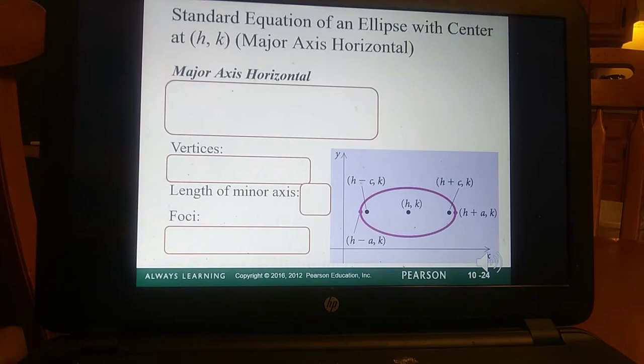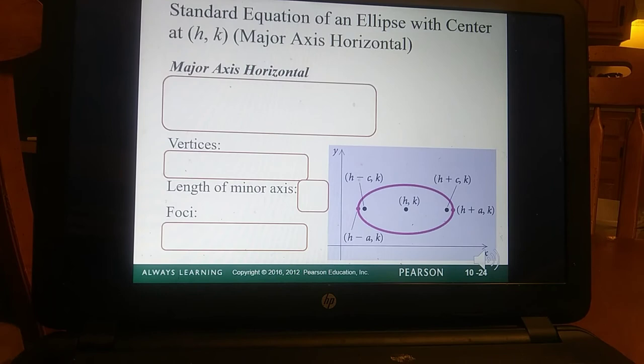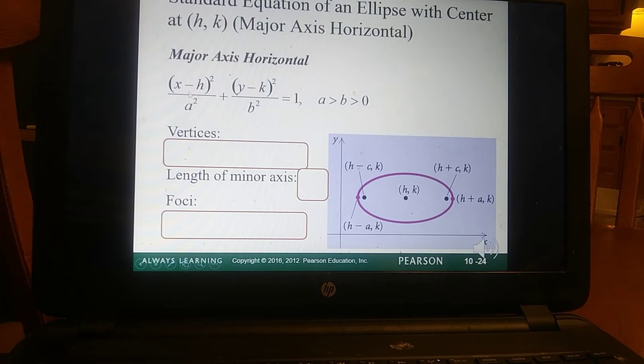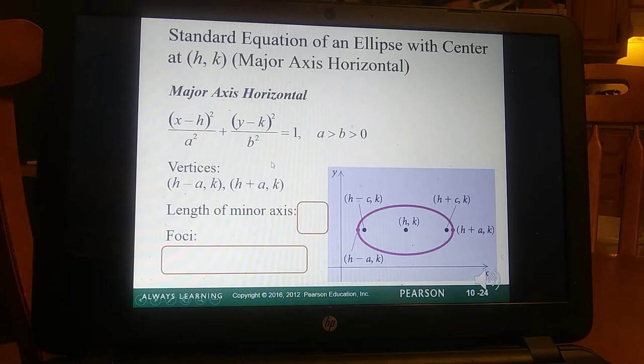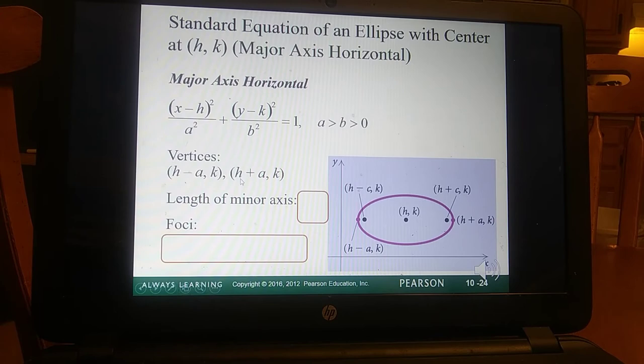So then what happens, once again, if it shifts, we're just going to have a nice little completing the square problem. Okay, so I can give you all the formals of what happens. Here's our h and k, so that's going to be contingent on what's with x and what's with y. Format is still the same.